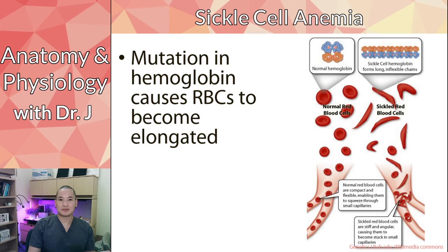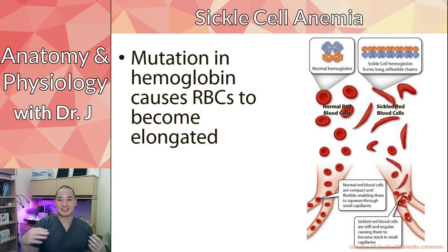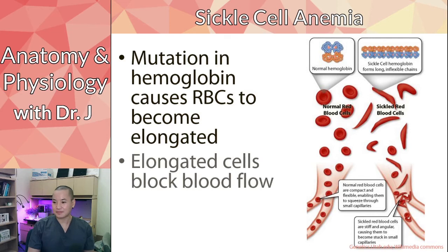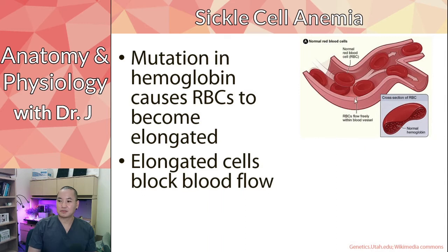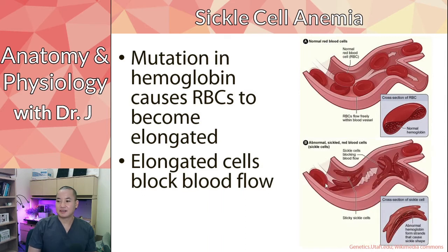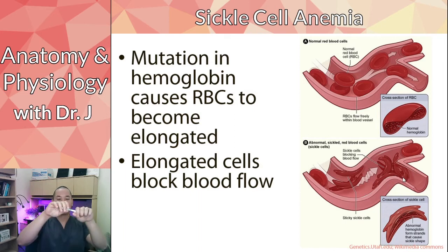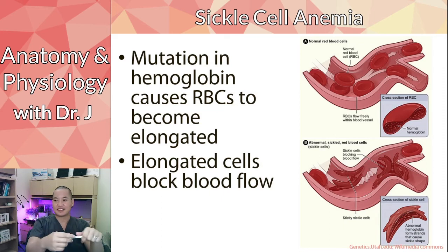Think of it like stuffing a water balloon full of marbles versus one stuffed with chopsticks - the one stuffed with sticks becomes elongated, pokey, and stiffer. These elongated cells block blood flow. Here we have normal red blood cells, but these abnormal sickle cells are forming a log jam. When they're jammed up, they can break apart at the cell membranes.